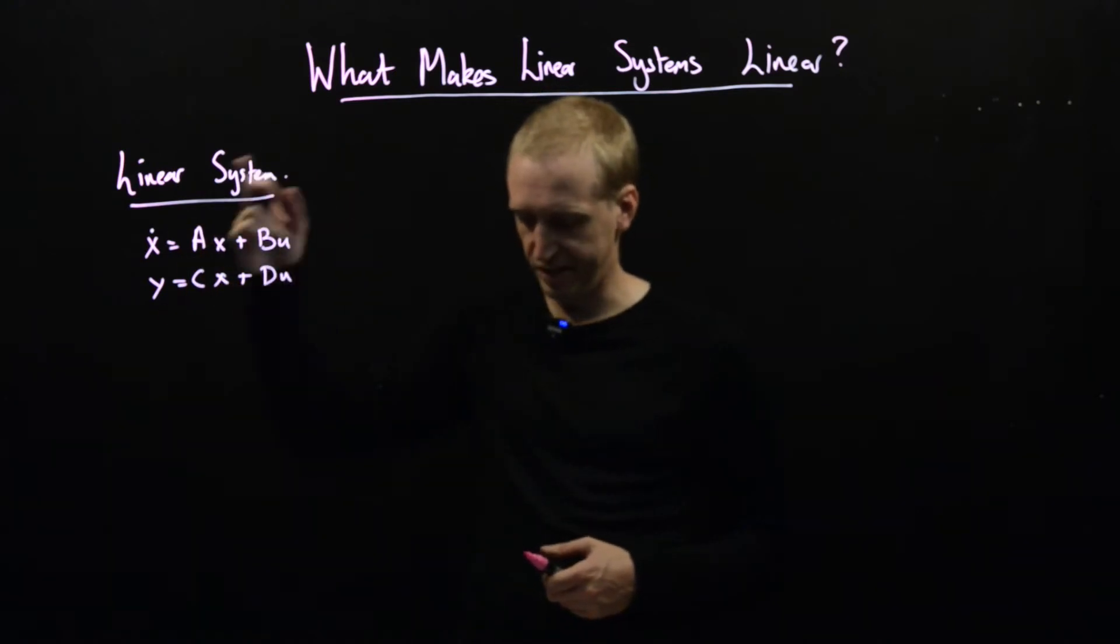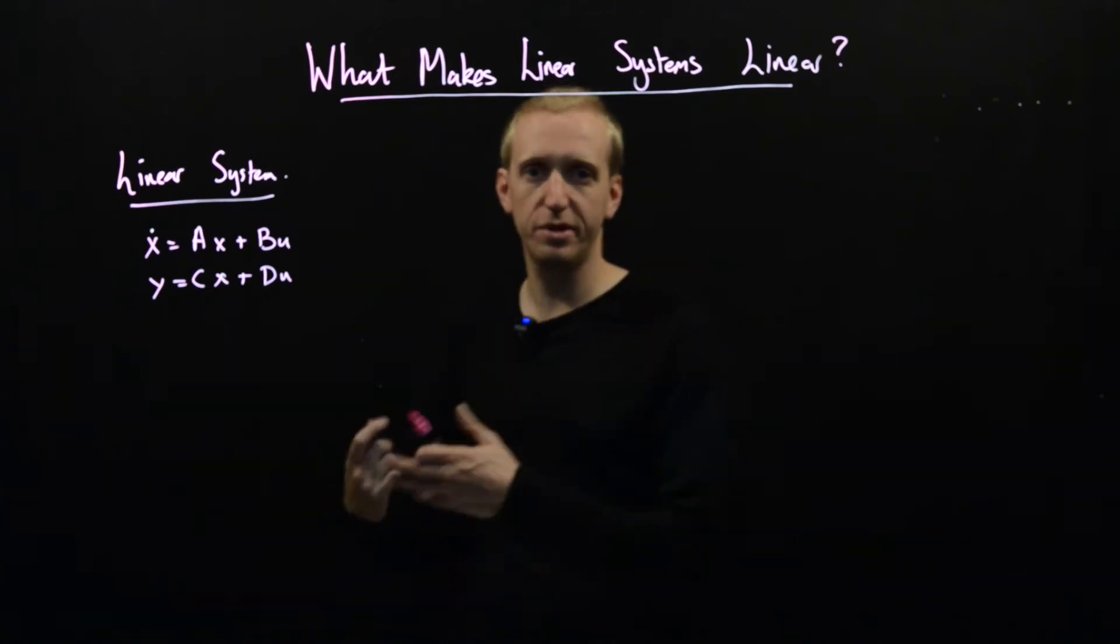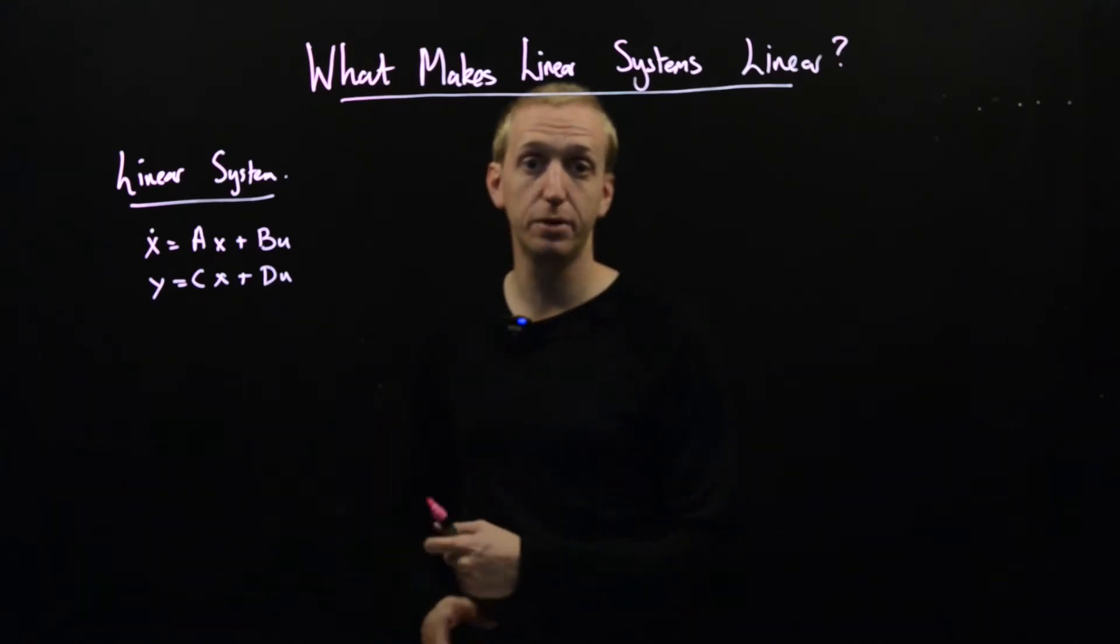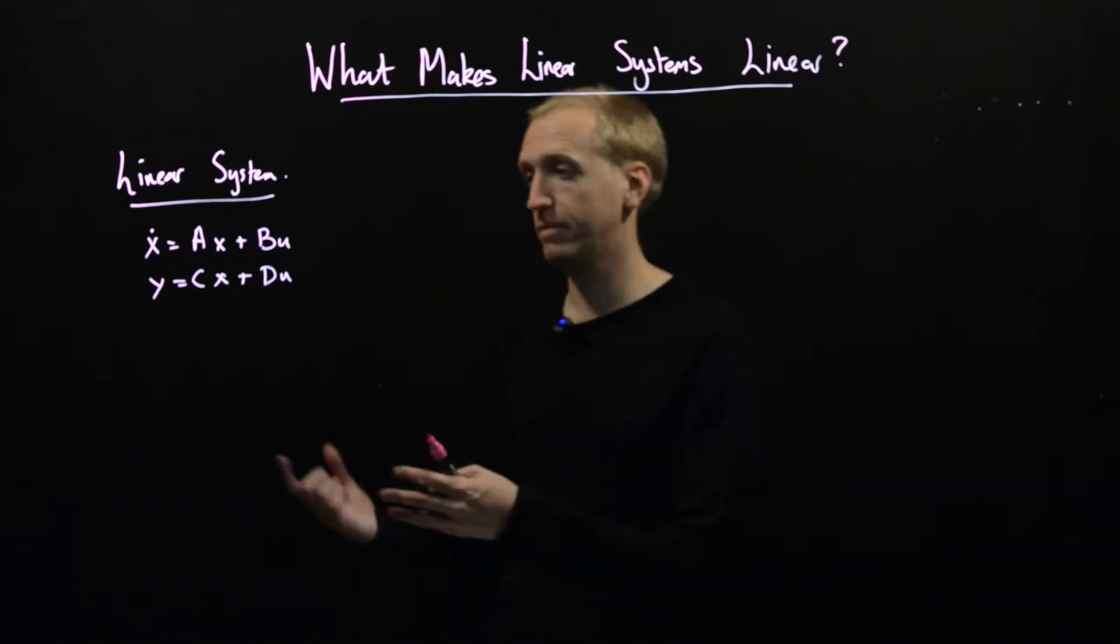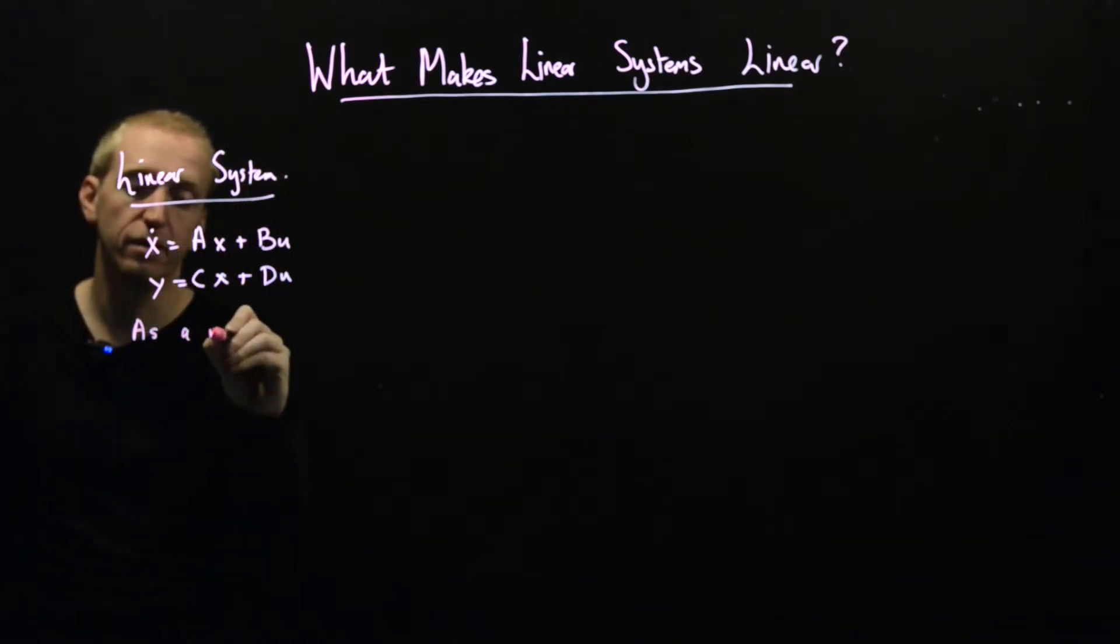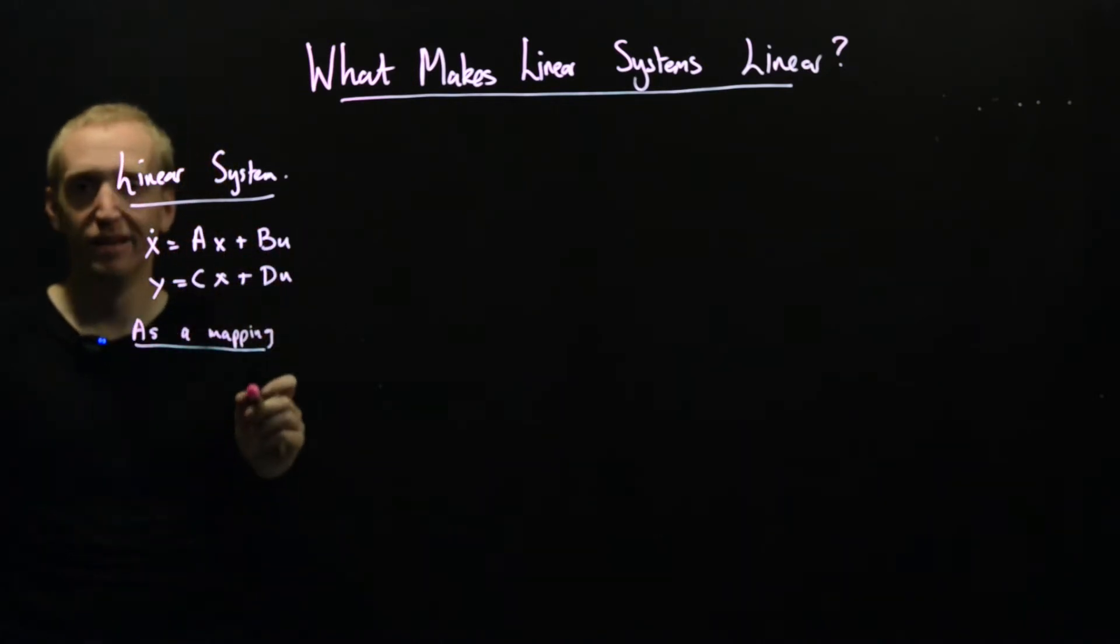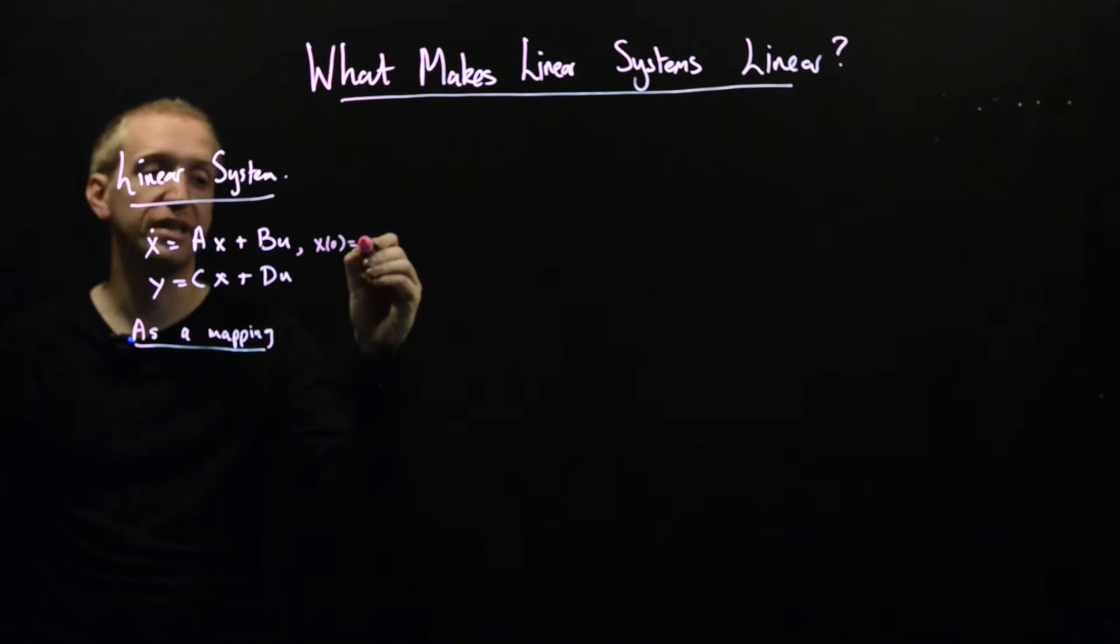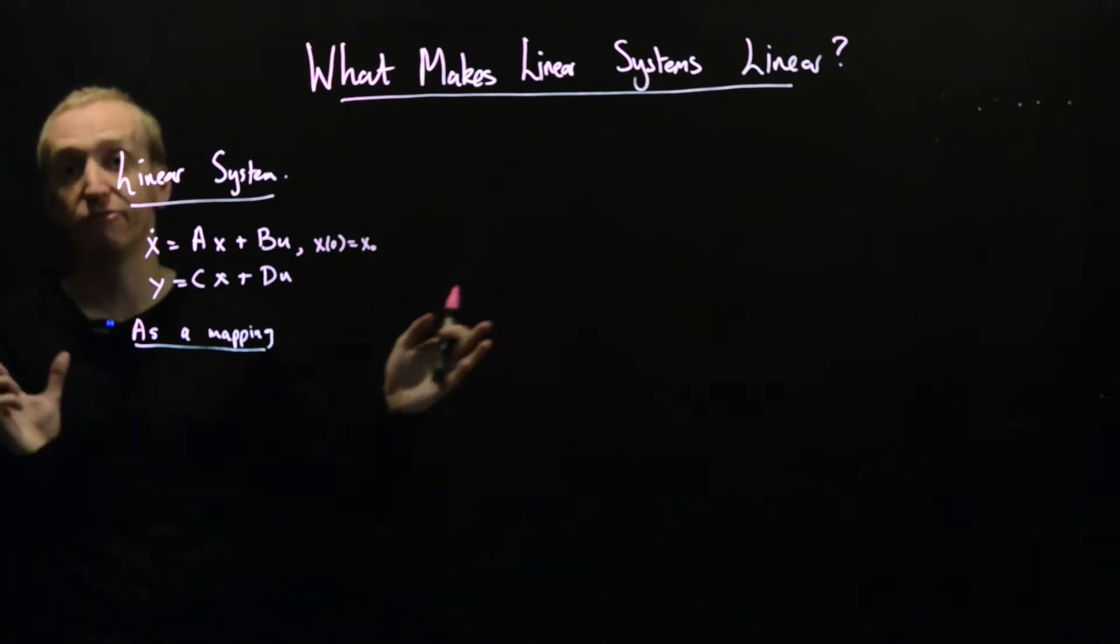You would probably have had this presented to you in transfer function form, but the way I want you to start thinking about these systems is as mappings from initial conditions and inputs to what the system does. This will have been implicit in things you've been taught before, but let's make it a bit more explicit. So what does this differential equation actually mean? It means that given certain initial conditions, given what the state is equal to at time t equals zero, and given a set of inputs, the differential equation will predict into the future what the system does.